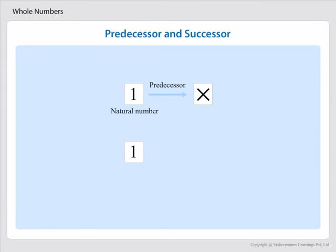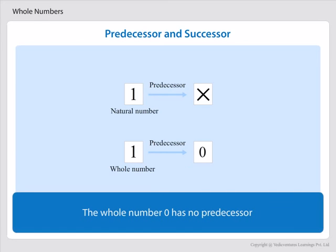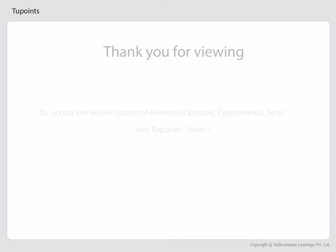But if we take 1 as a whole number, it has predecessor 0. The whole number 0 has no predecessor.